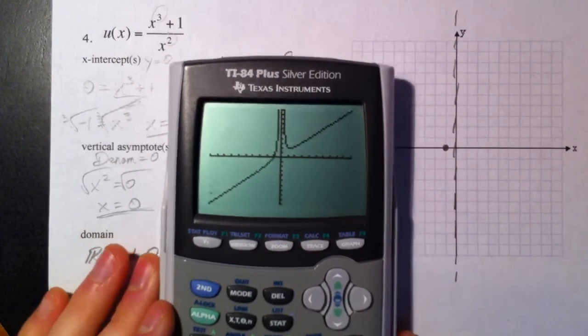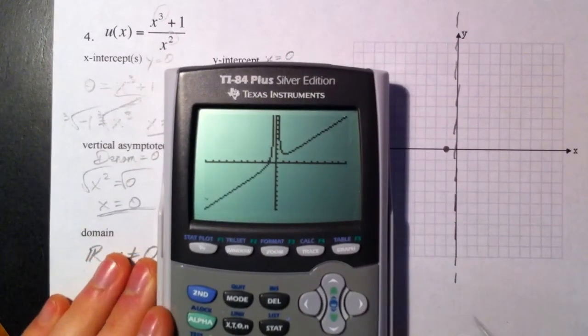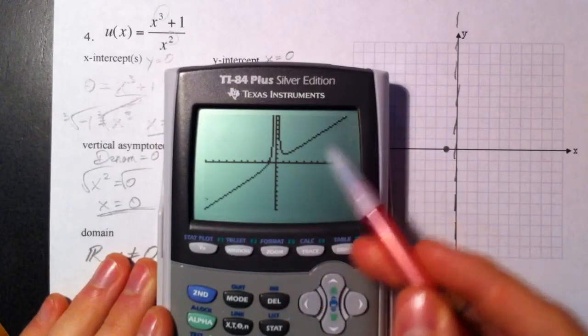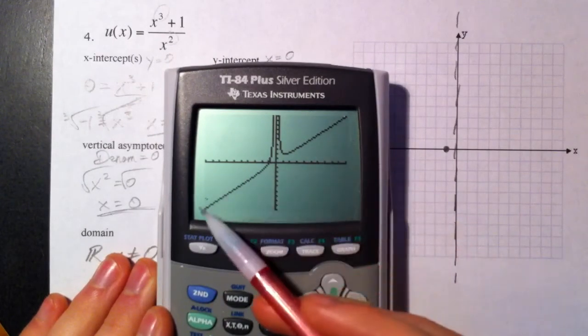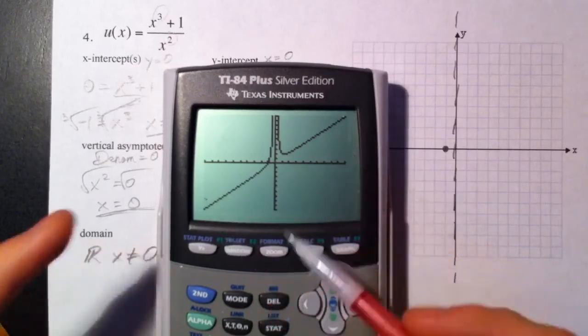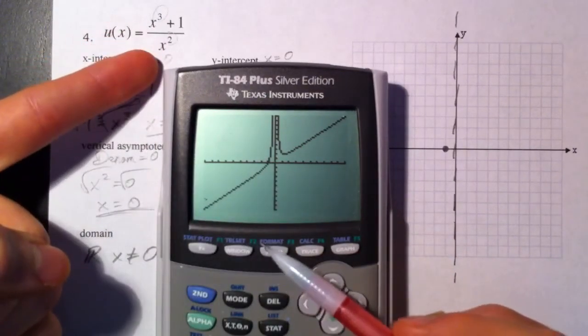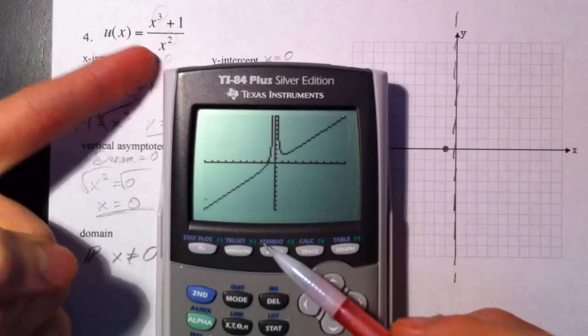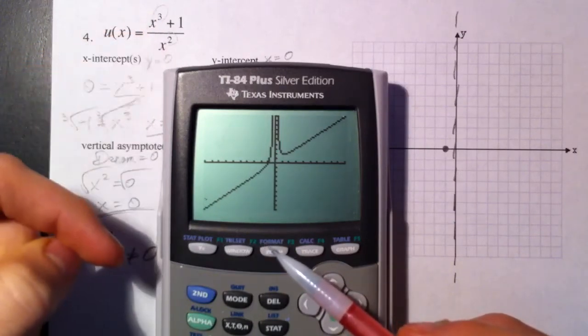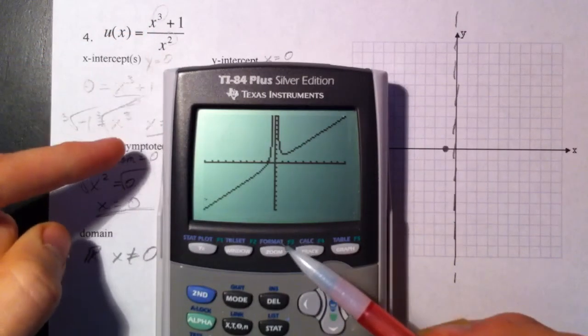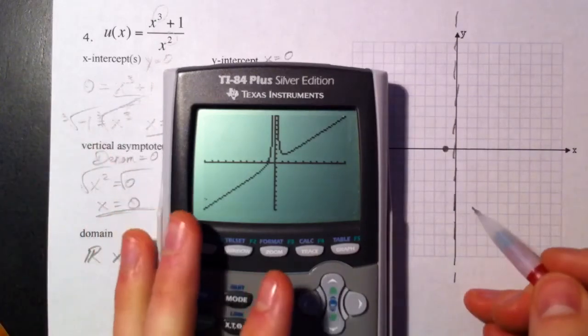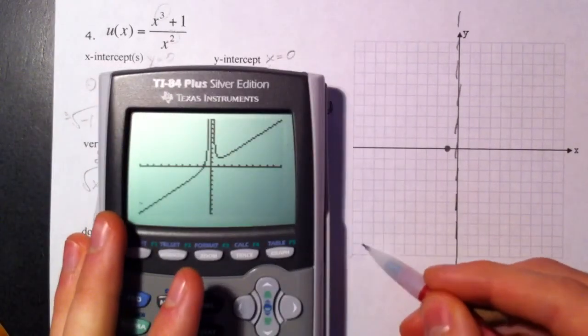This is slightly different from what we've seen. This right here is what we call a slant asymptote, and it comes as a result of the degree on top being one bigger than the degree on the bottom. So you actually divide - you can use long division to figure out what the slant asymptote is - but we're not going to go that deep.